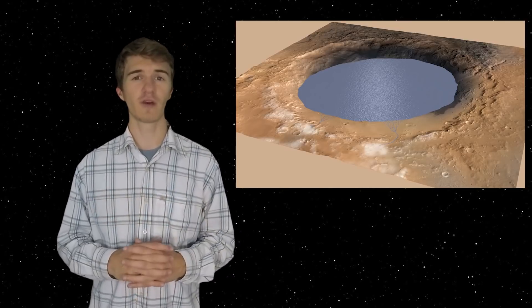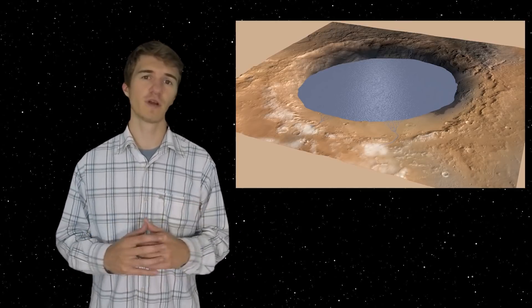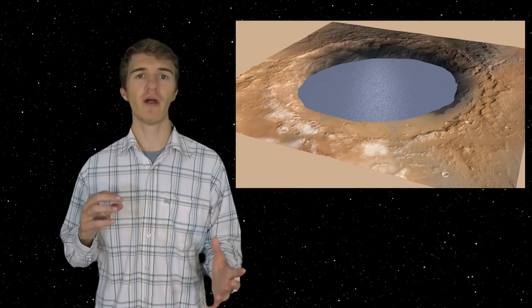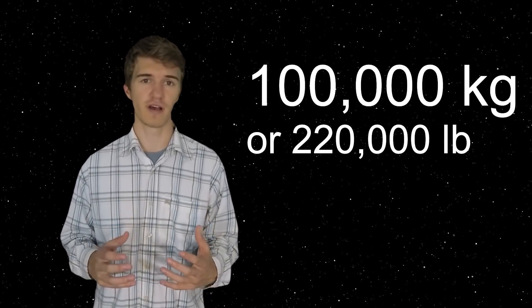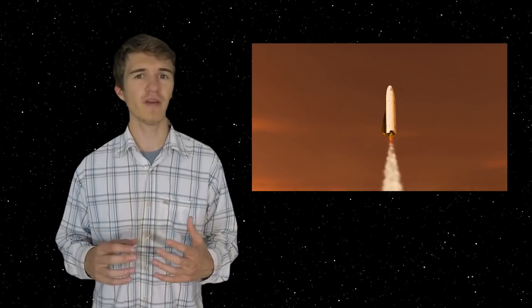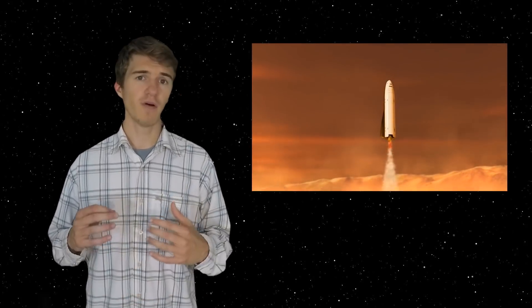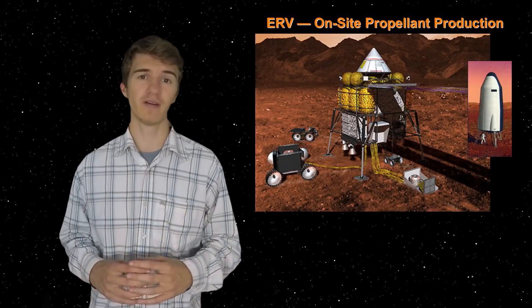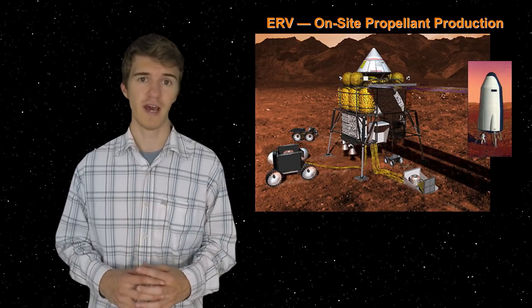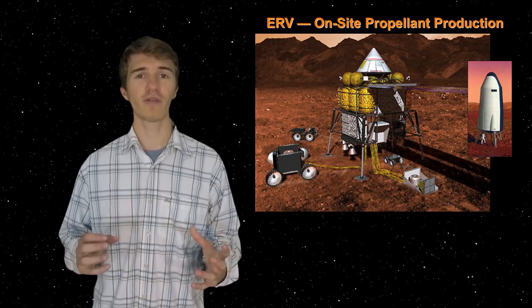Now we get into the question of how much do we think we'll need. For NASA's exploration zones, they said they wanted about 100,000 kilograms of water available for astronauts. And this primarily is for a propellant issue. Most of the water that would be used for an entire mission will go to developing the propellant to get them back off of Mars.